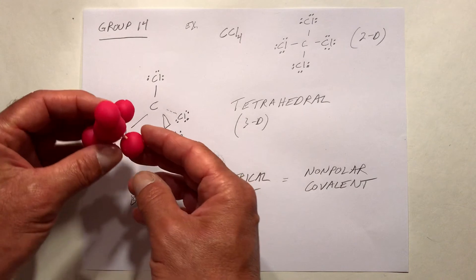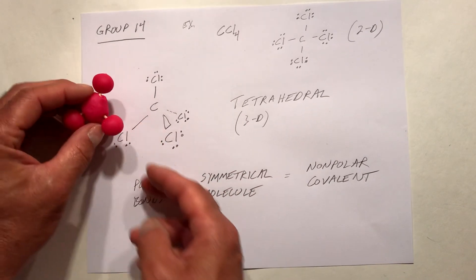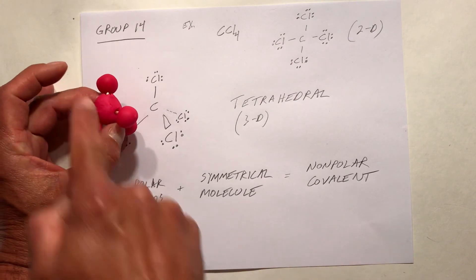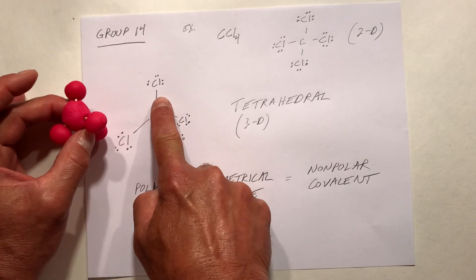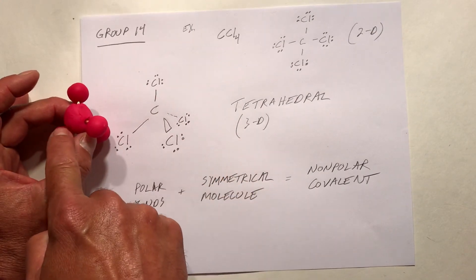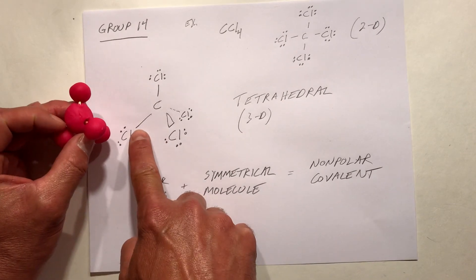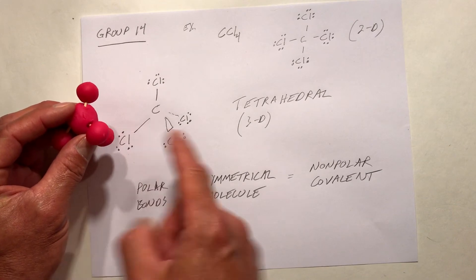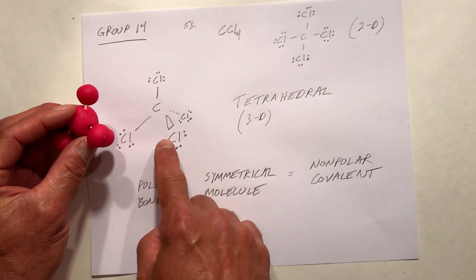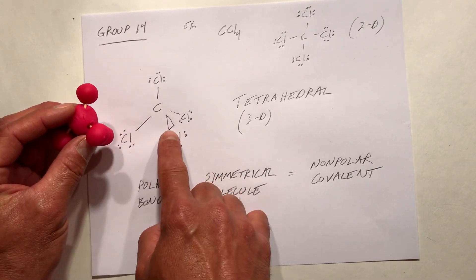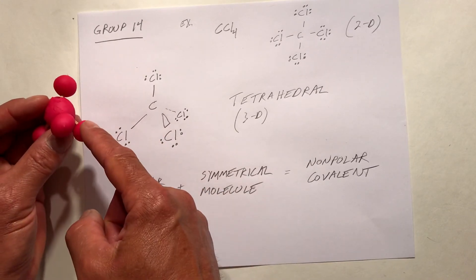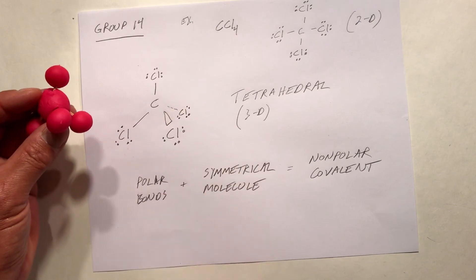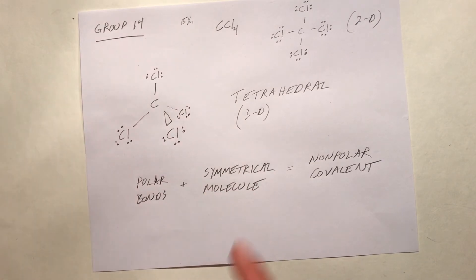For the tetrahedral shape, you have a bond in the plane of the paper, another bond in the plane, then a bond coming out at us represented by the triangle, and a bond back here going into the plane of the paper represented by the dashed line. That's how you draw that shape.